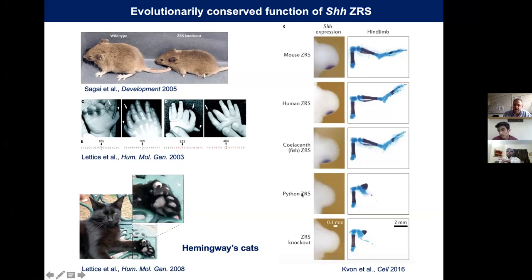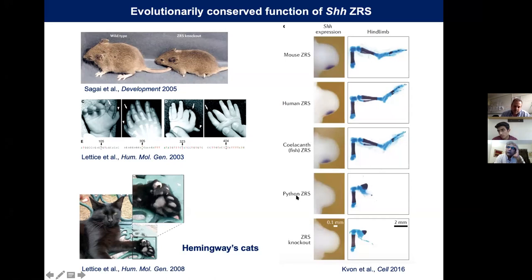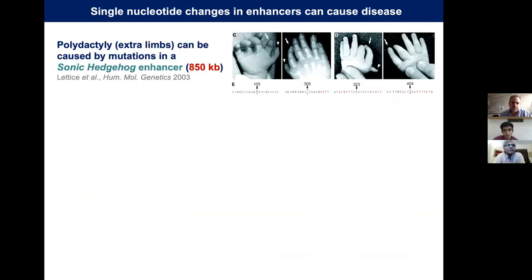In the same paper — which I recommend reading — the authors identified a 17-base-pair deletion in the python ZRS as the most marked difference from mouse and human sequences. This region is a putative binding site for ETS transcription factors. When they inserted those 17 base pairs back into the python ZRS, they rescued the effect. It's a beautiful study.